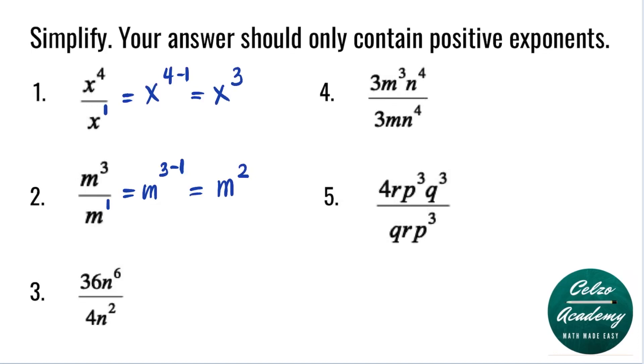Question number 3: 36 n to the 6 over 4n squared. Question number 3 has numerical coefficients 36 and 4. The first thing that we need to do here is divide the coefficients 36 divided by 4, which is 9. Now let's simplify n to the 6 over n squared. Using the quotient rule, we keep the base n and subtract the powers 6 and 2. So the answer is 9n to the power of 4.